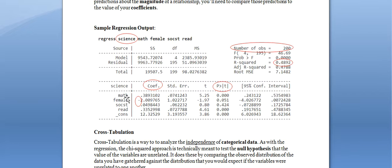For example, math here has a p-value of 0.000. That indicates a 100% probability that there is some relationship between math scores and science scores on this exam. We would say that math is statistically significant in predicting a test taker's science score — we're pretty sure there is at least some relationship between the score on the math portion and the score on the science portion.